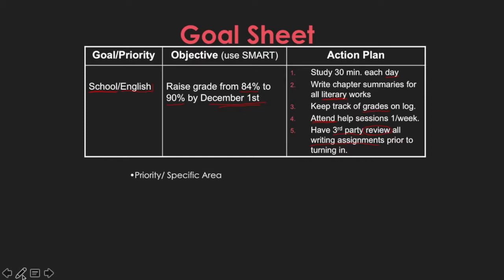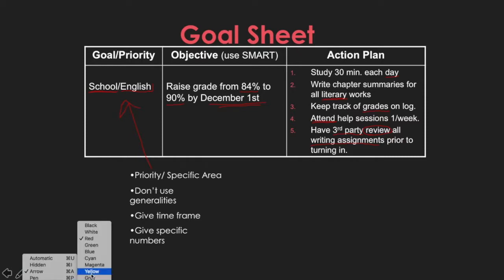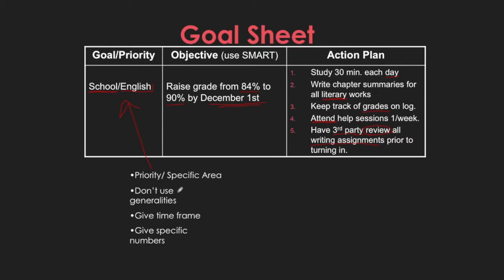A couple things to recap — and I know I'm hammering this in, but it's really important. Goal writing and objective writing is a skill and it takes practice. The goals have got to be the priority, and then the specific area under that priority. Be careful not to use generalities with objectives. Make sure you give yourself a time frame for most of your goals, and when possible, give specific numbers.